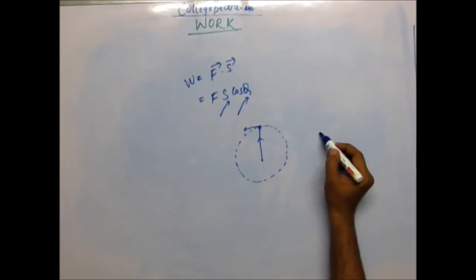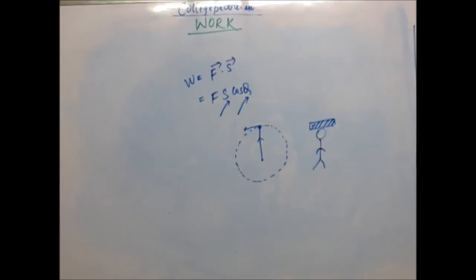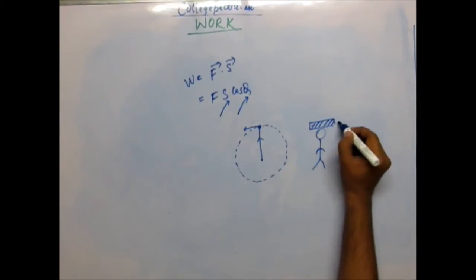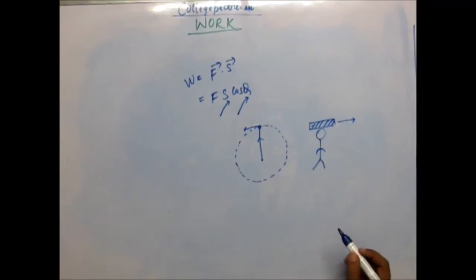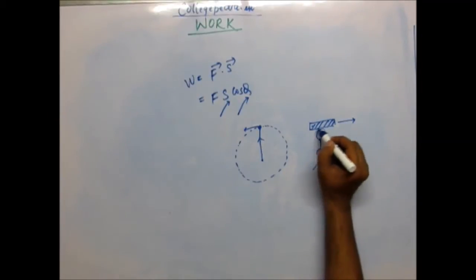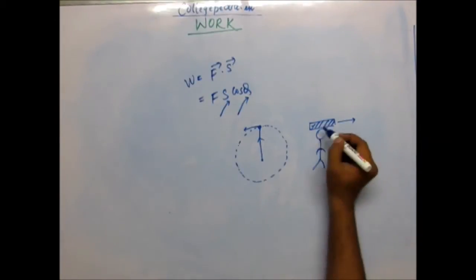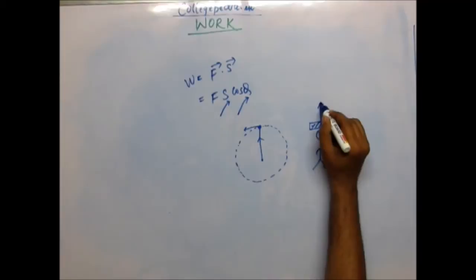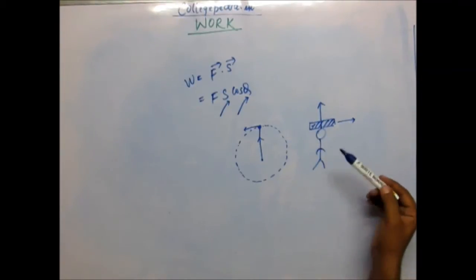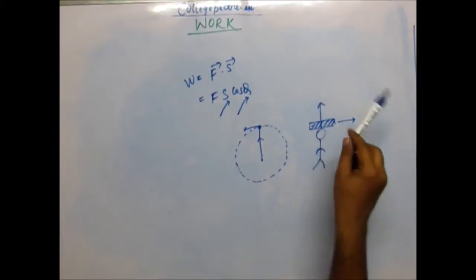If a coolie or laborer is carrying something on his head and moving horizontally, the displacement is horizontal but the force being applied is vertical. When two bodies are in contact, the normal reaction is perpendicular to the plane of contact. The plane of contact would be this and the normal reaction by the head of the coolie would be vertically upward.